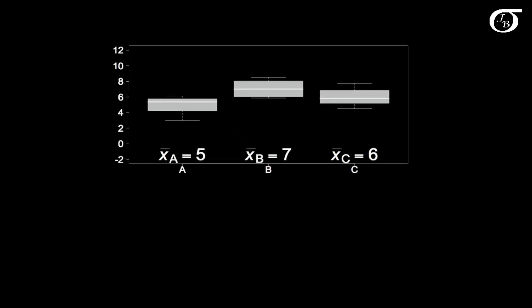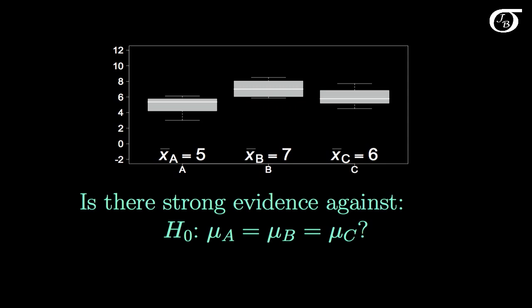Here I have plotted three box plots corresponding to three samples from three separate populations. A natural question that arises is, is there strong evidence against the null hypothesis that the population means are all equal?